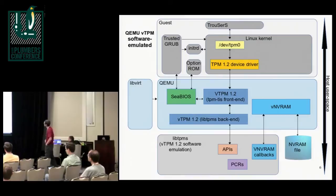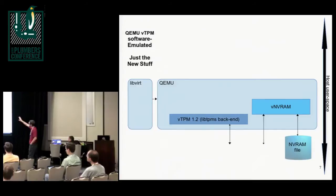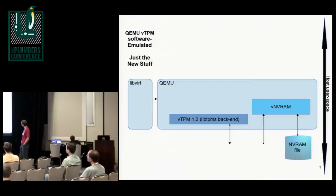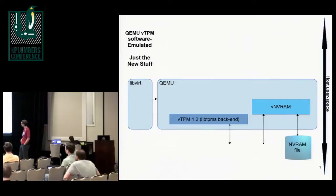Which brings us to what we're trying to work on: vTPM. As you can see, this is a lot like the previous slide — not too much is different. What is different is this: we keep the same front end, all the user space is the same. Now we have libTPMS, which is an open source library included in most of the distros you'd commonly want to use. We set up a call from the front end, make a call into the library, set up some callbacks so it can store into persistent memory in the NVRAM, and then that can be migrated around with QEMU images.